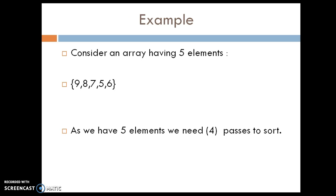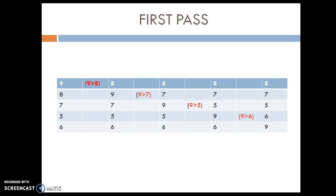Now let's take an example. We will sort these 5 elements in ascending order: 9, 8, 7, 5, 6. As I mentioned, for n elements, n minus 1 passes are required. Since we have 5 elements, we need 4 passes to sort. These 4 passes are nothing but 4 iterations.